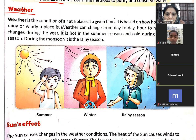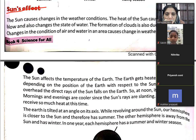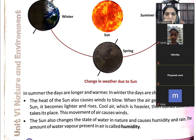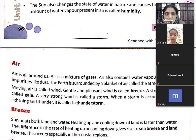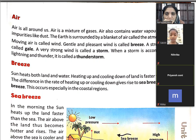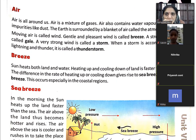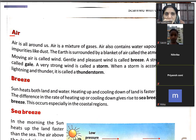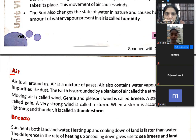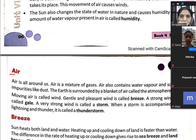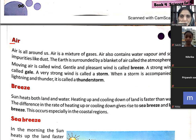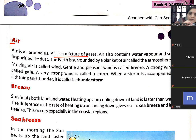The sun's effect has also been explained in the previous video. In this video we are going to start with air. What is air? Air is all around us. Air is a mixture of gases — not only oxygen.